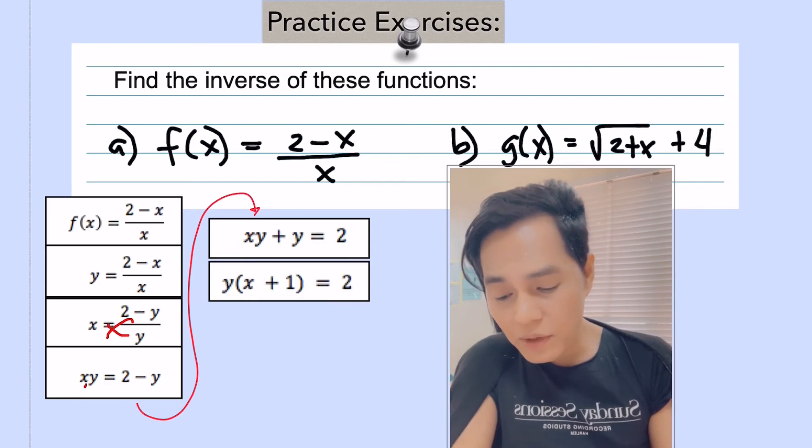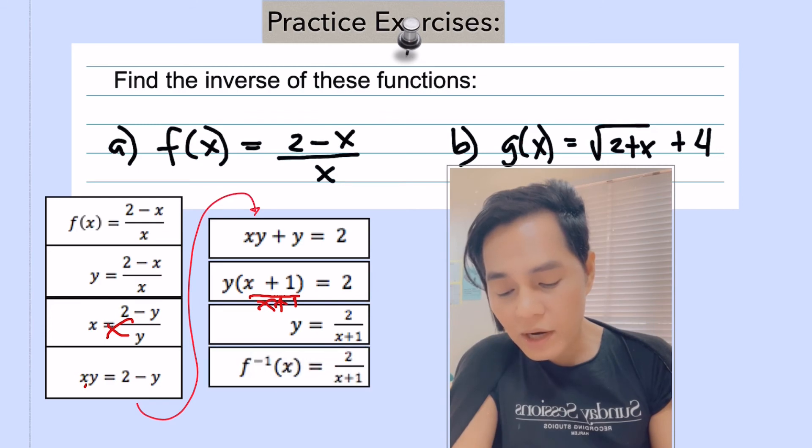And then there you go. We are going to divide both sides by x plus 1. And you now have the inverse of this function which is equal to 2 over x plus 1.